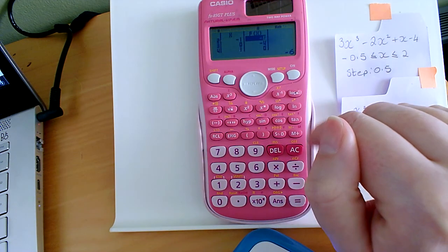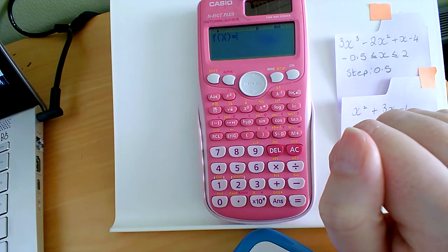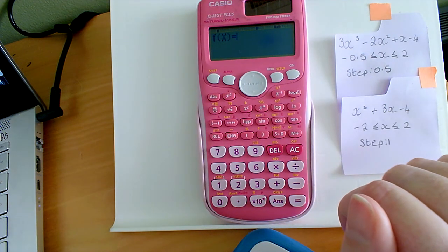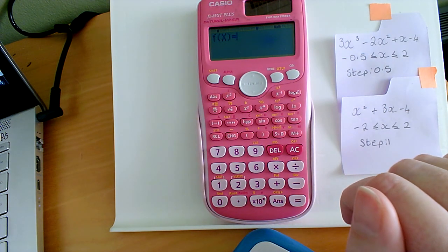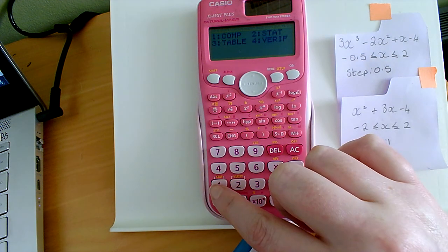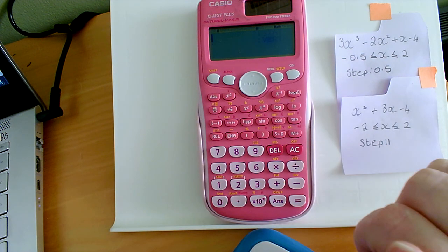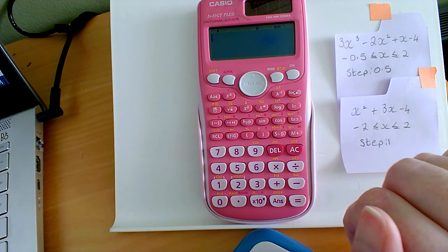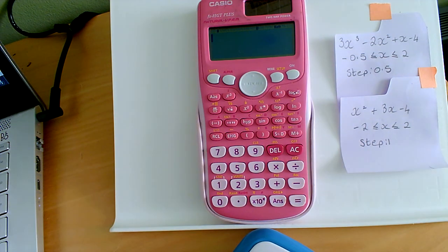To clear everything off your screen again, we're going to press the on button. And to make sure that you can revert back to your calculator mode for the remainder of your exam, press mode. And we want to go to 1, and we're back to using our calculator as normal. I hope this helps.